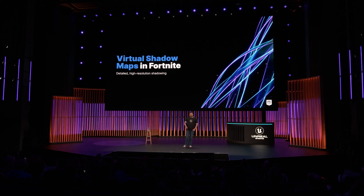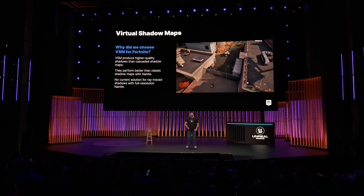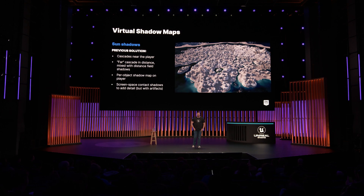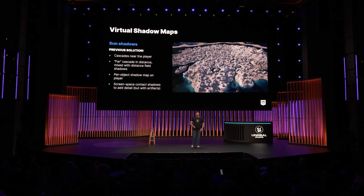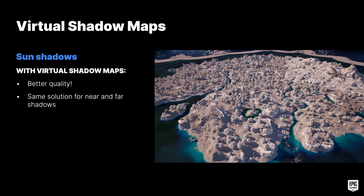Let's move on to how virtual shadow maps were used to improve shadows in Fortnite Chapter 4. Why did we choose VSM over other methods? VSMs produce higher quality shadows than cascaded shadow maps, perform better than classic shadow map techniques when rendering Nanite meshes, and since we don't currently have a solution for ray tracing Nanite at full resolution, ray-traced shadows are not a good fit. In previous chapters, sun shadows involved cascaded shadow maps near the player with a single far cascade mixed with distance-field shadows, a dedicated per-object shadow map for the player character, and screen-space contact shadows for high detail — though they also added trailing artifacts.